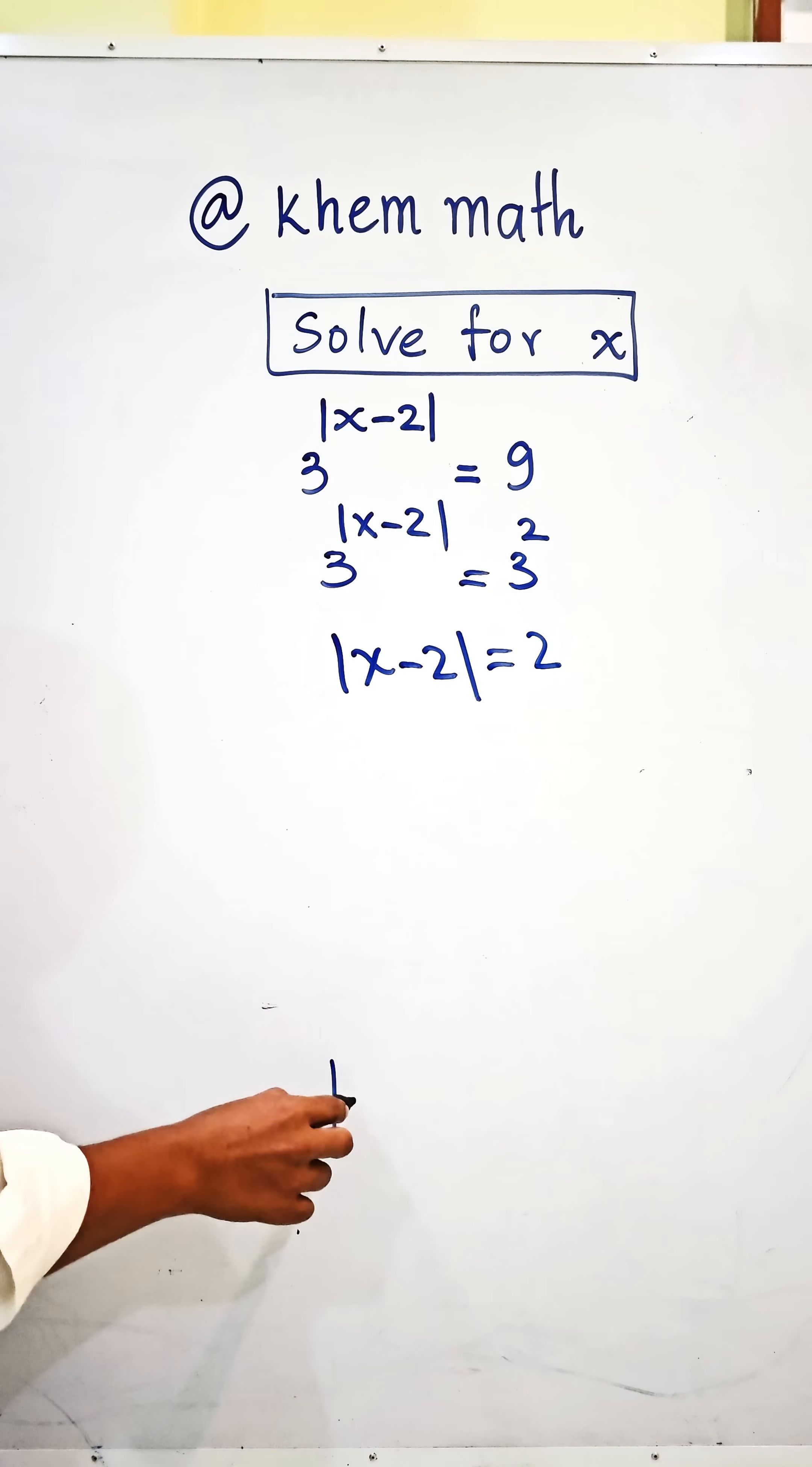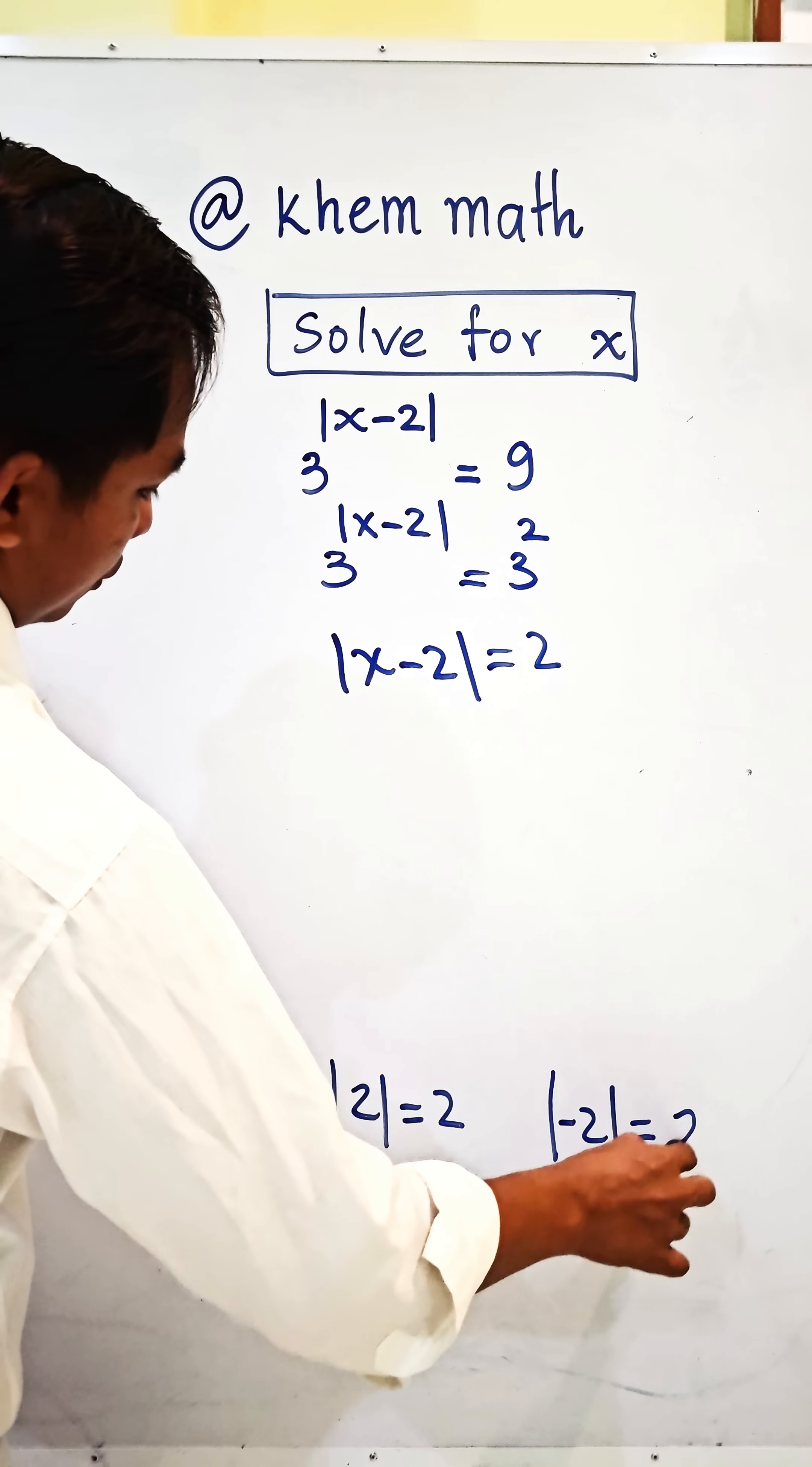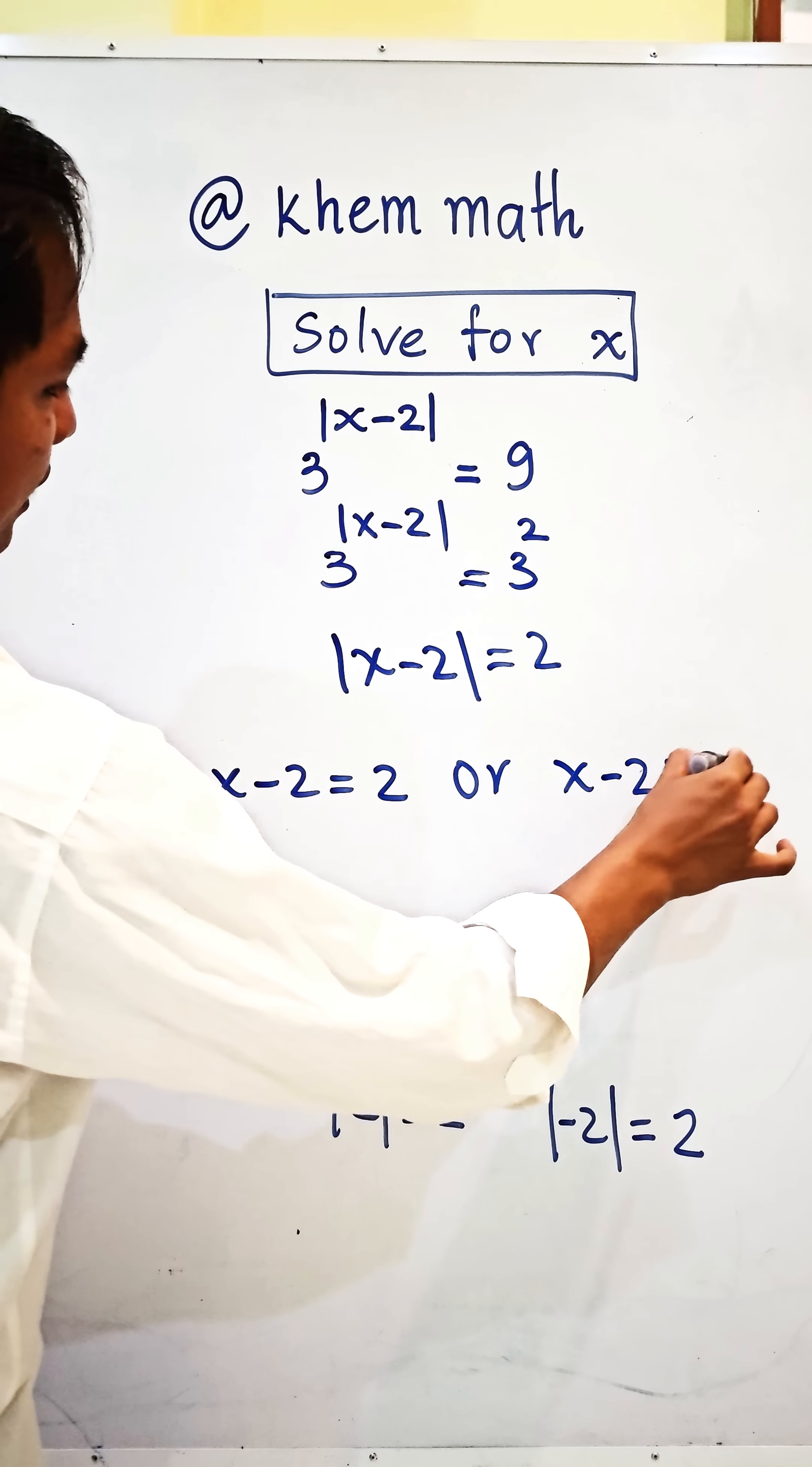The absolute value of 2 equals the absolute value of negative 2, which also equals 2. So x minus 2 can be 2 or negative 2. We get x minus 2 equal to 2 or x minus 2 equal negative 2.